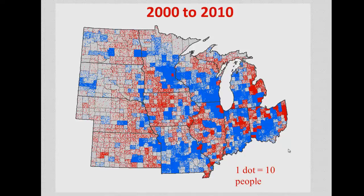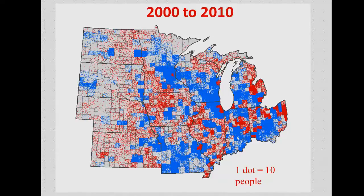We also look at population from a regional context. This graph covers the Midwest — one dot equals 10 people, a red dot is a decline, and a blue dot is a gain. For Iowa, nearly all of the growth is associated with metropolitan areas — core counties or adjacent counties to metro areas. Most severe decline is occurring in rural counties, as well as some micropolitan, medium-sized manufacturing-dependent cities.